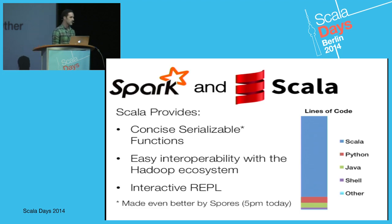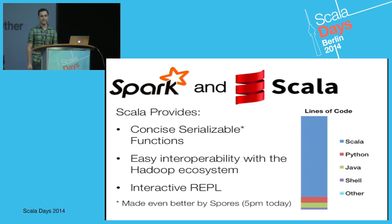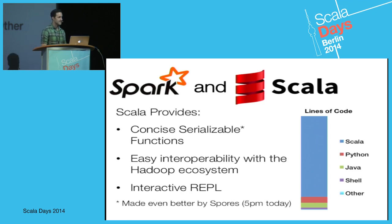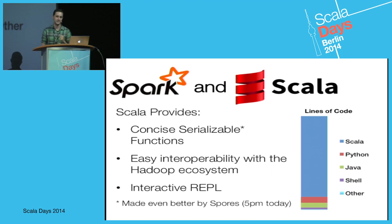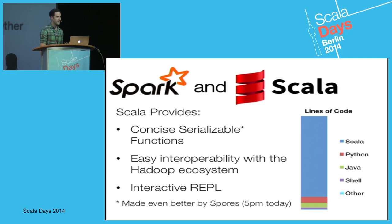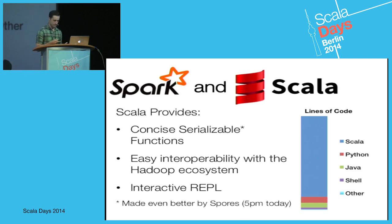Another key feature of Scala is its interoperability with the Hadoop ecosystem — we can use the input formats and read from HDFS, which was one of the key things that made Scala a big success for us. And finally, the interactive REPL. This ability to do interactive data exploration is one of the unique things about Spark, and we couldn't have done that without the Scala REPL.